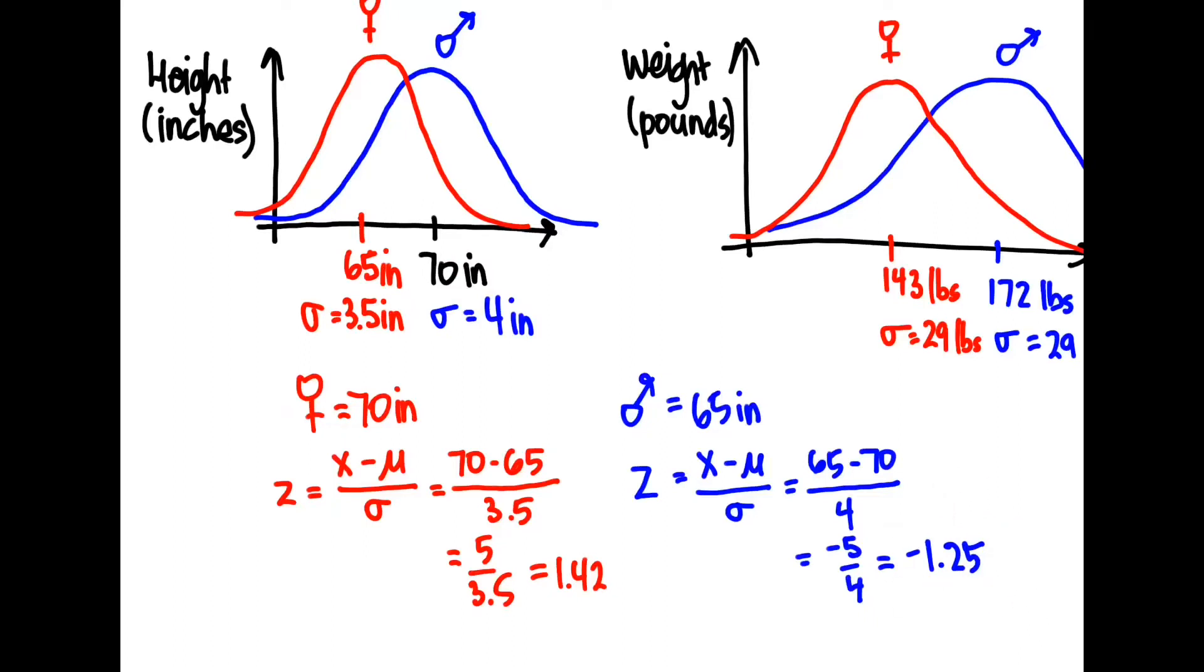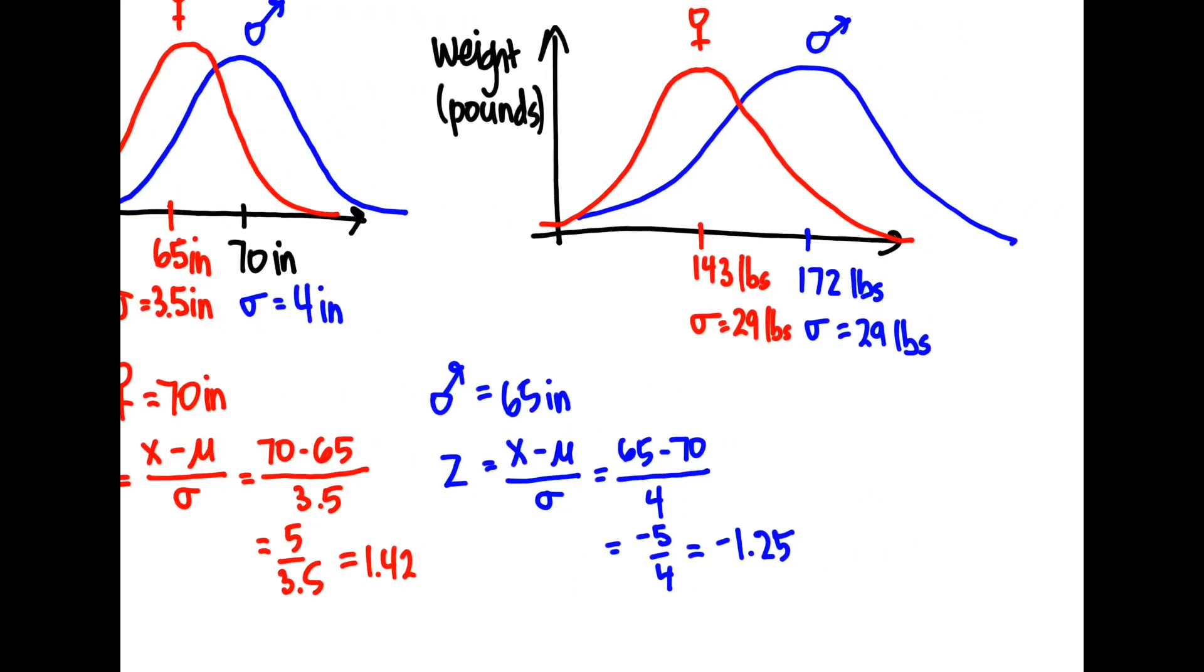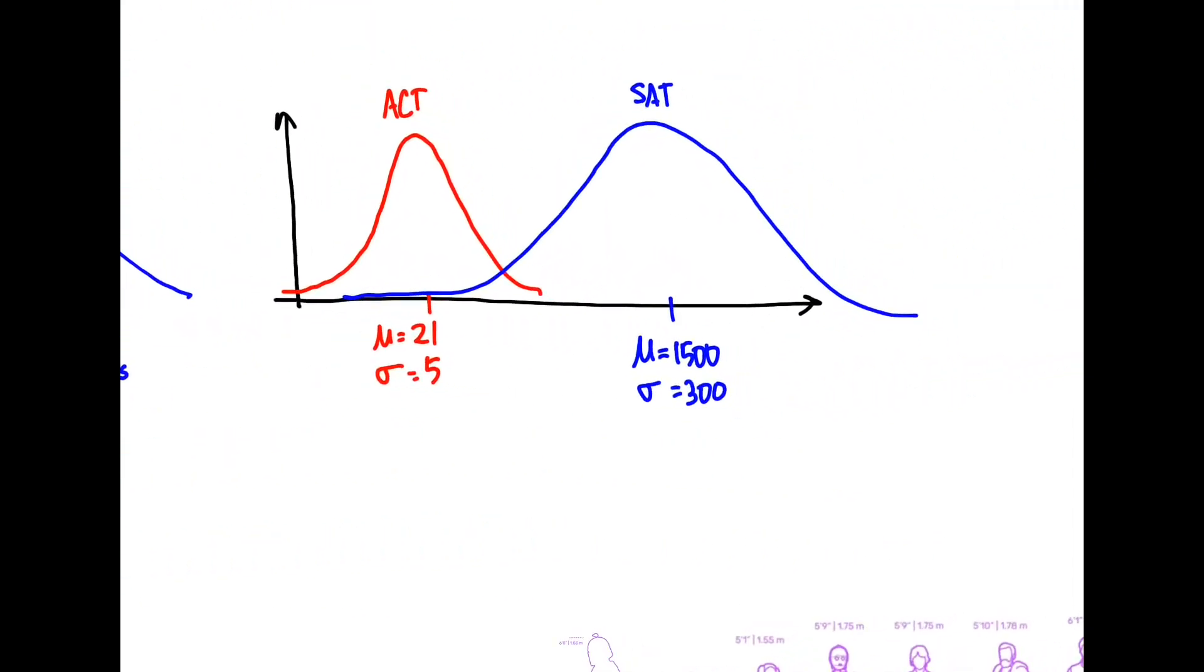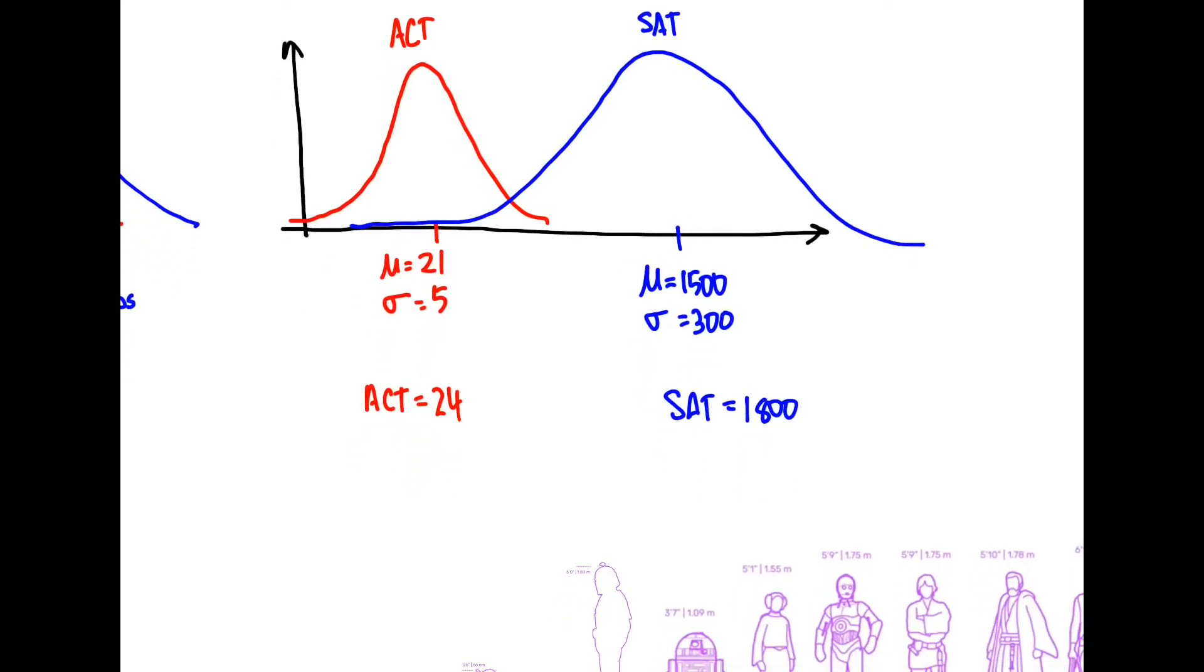We calculated these numbers but what can we actually do with that? So let's come over here to our ACT one. Let's say that you have two candidates that are applying for the same slot. And one person took the ACT and got a score of 24. And the other person took the SAT and got a score of 1,800. So which one got the higher score? Which one should you admit? Assuming we're only admitting based on the score. So let's calculate our z-scores here.